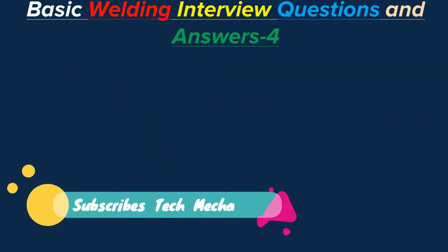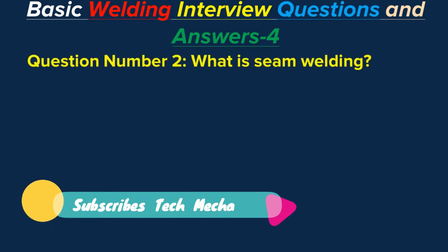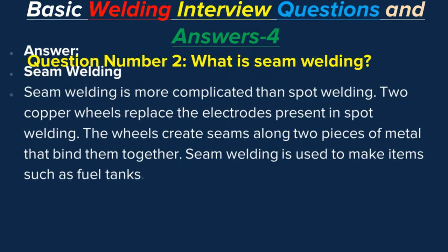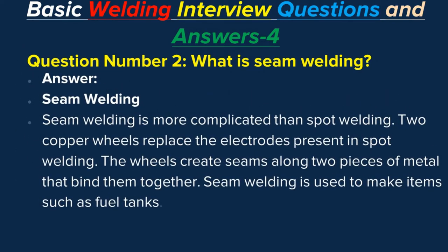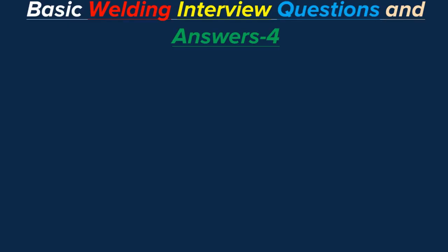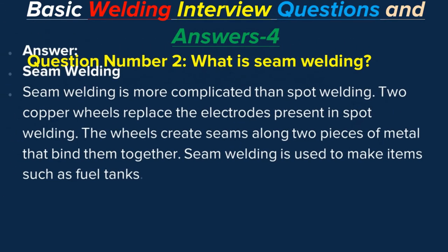Question number two: What is seam welding? Answer: Seam welding is more complicated than spot welding. Two copper wheels replace the electrodes present in spot welding. The wheels create seams along two pieces of metal that bind them together. Seam welding is used to make items such as fuel tanks.